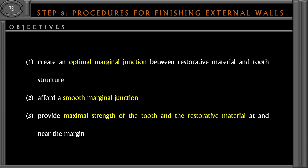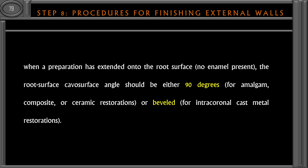There are three objectives in this step of tooth preparation. First, it is to create an optimal marginal junction between the restorative material and the tooth structure. Second, it is essential to afford a smooth marginal junction. Third, to provide maximal strength of the tooth and the restorative material at the cavo-surface margin.